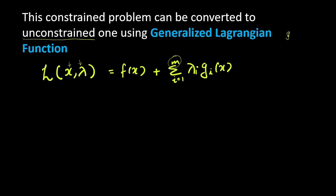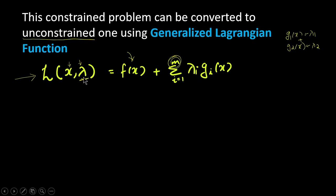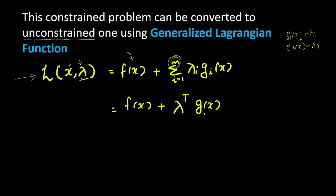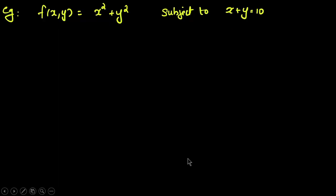We write it as f of x plus the constraints added as a term: sigma i equals 1 to m of lambda_i times g_i(x), assuming we have m constraints. So if we have two constraints g1(x) and g2(x), we add lambda_1 for g1 and lambda_2 for g2 — these are the Lagrangian multipliers. The sum is lambda_1·g1(x) plus lambda_2·g2(x). This summation can be rewritten in matrix format as lambda transpose times g of x.